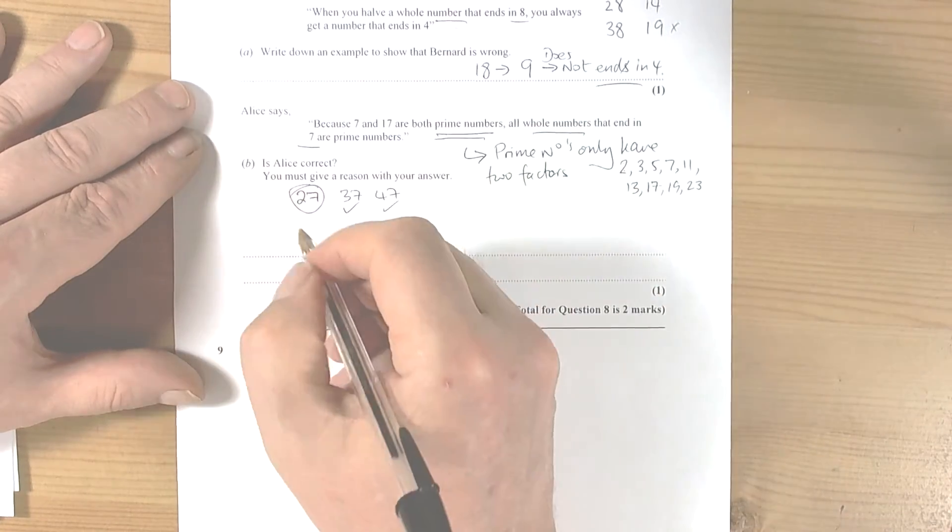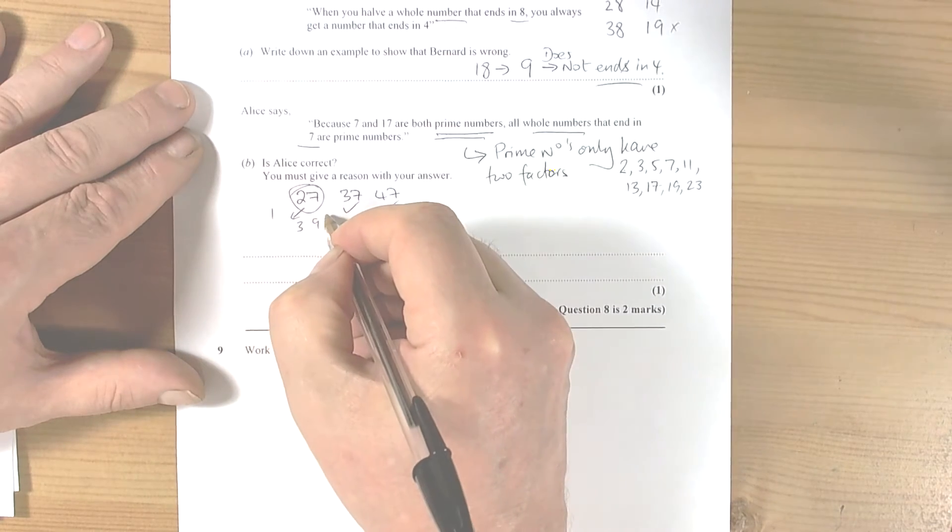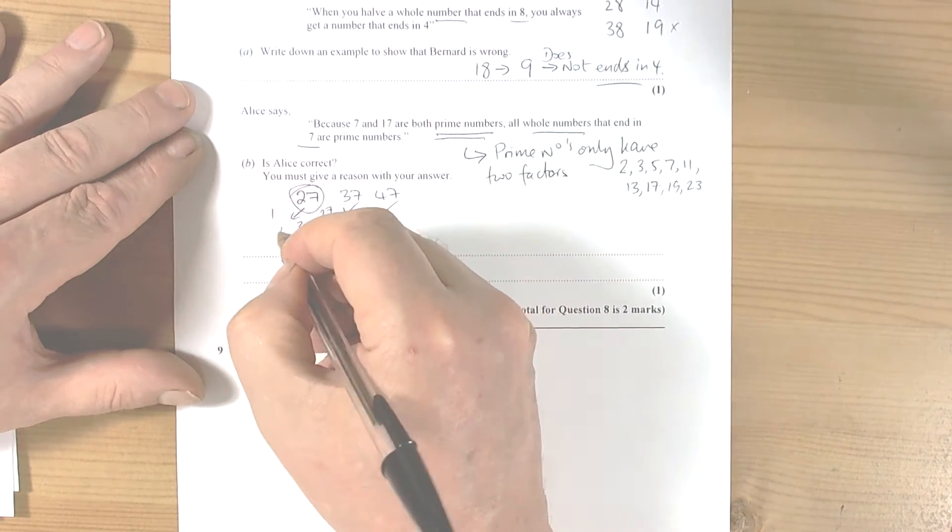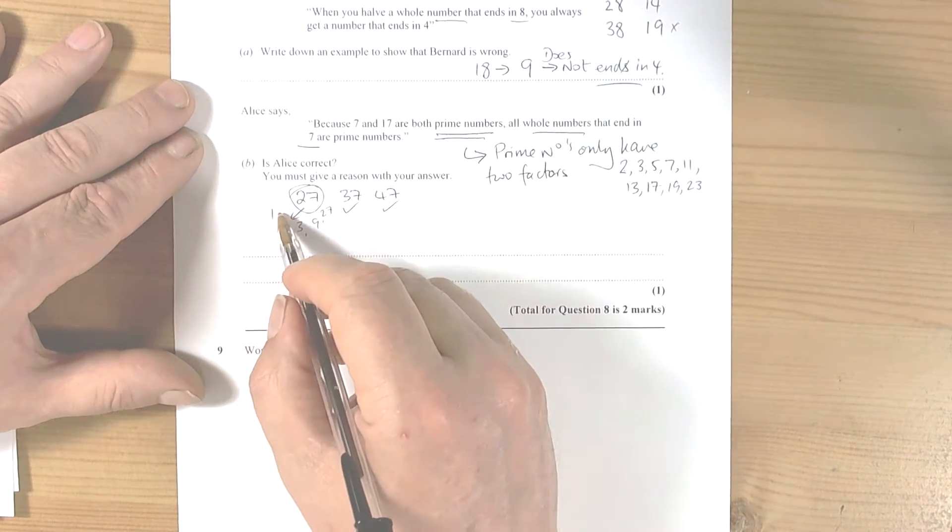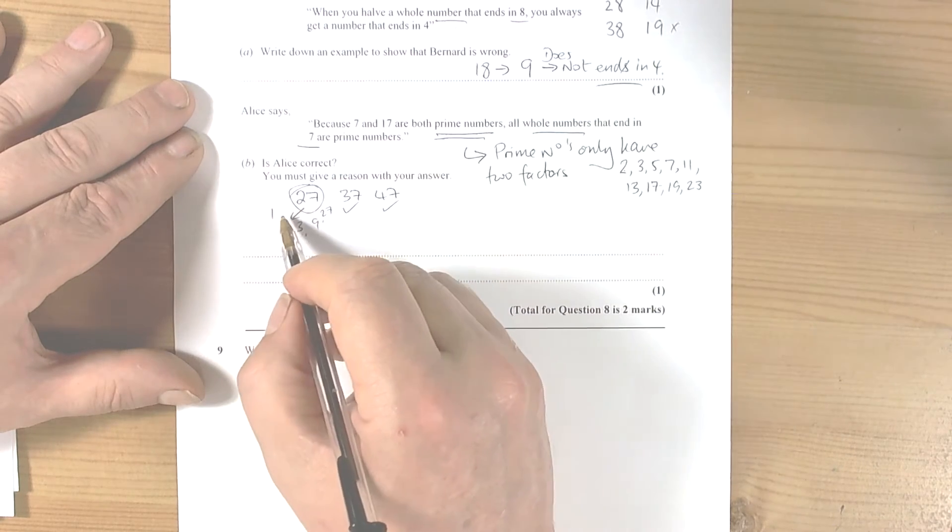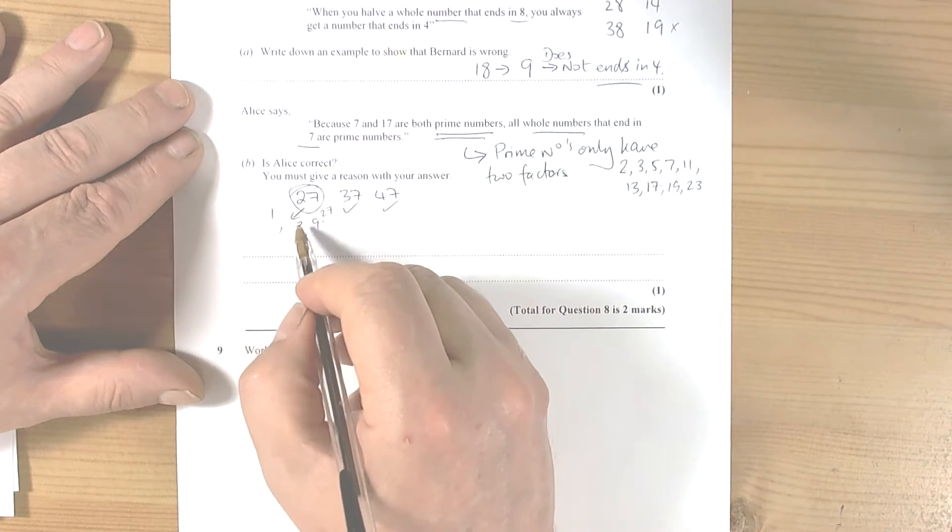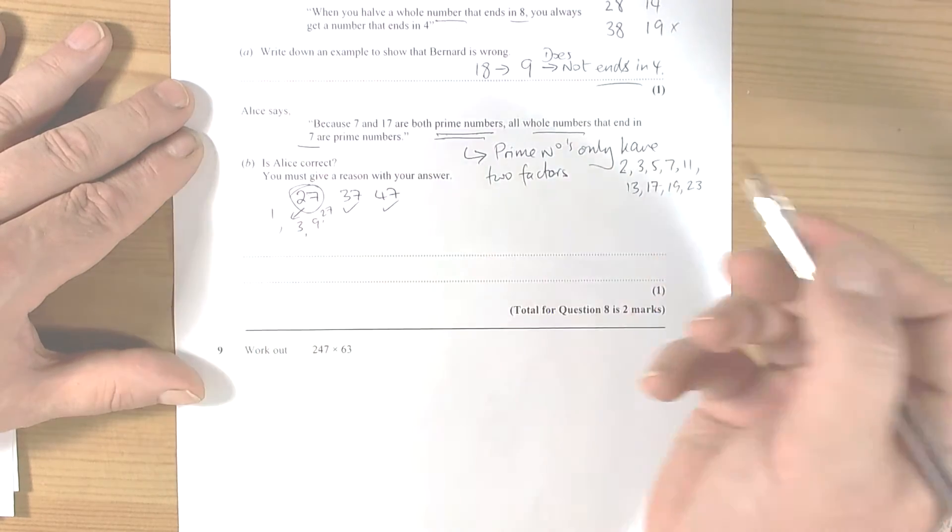But we notice that 27 has the factors 1, 3, 9, 27, so all of those will be factors of 27. So factors, remember, numbers that go into a whole number, that goes into another whole number and leaves no remainder. So 1 times 27 is 27, 3 times 9 is 27, so they're factors of 27.